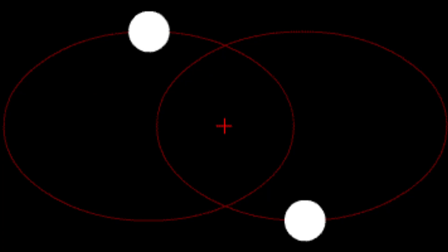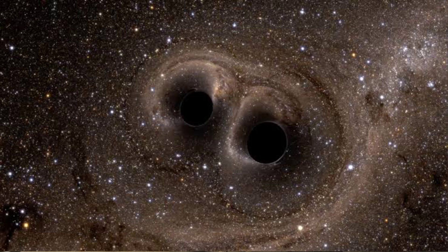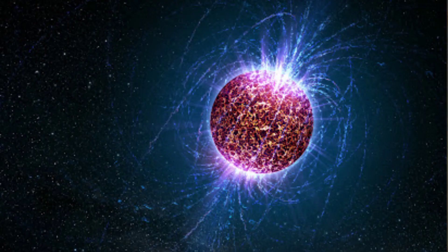The simplest system that produces gravitational waves is two masses orbiting their common center of mass. However, the strongest gravitational waves are produced by cataclysmic events such as colliding black holes, supernovae, or colliding neutron stars.